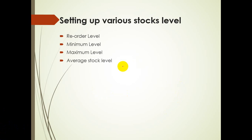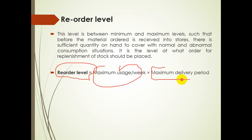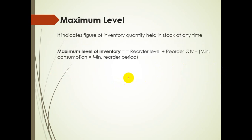The reorder level is the level between minimum and maximum level that is normally kept in the store to ensure sufficient inventory for covering normal and abnormal situations when an order is placed. The formula is: Reorder Level = Maximum Usage × Maximum Delivery Period.